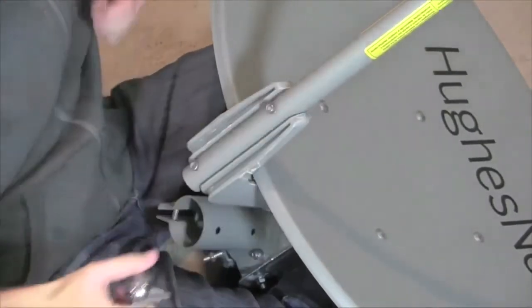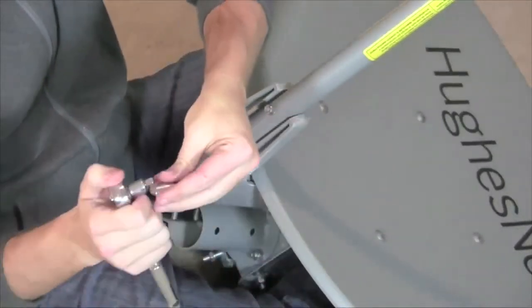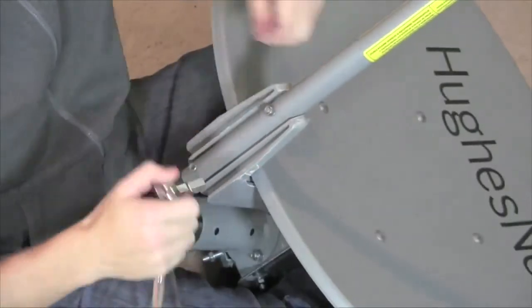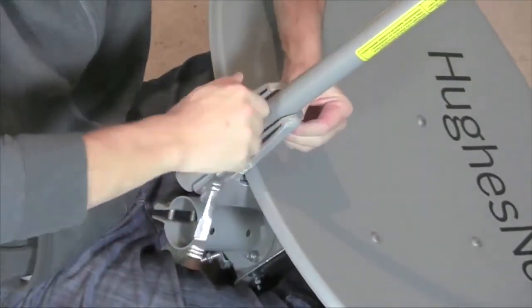Use a 7/16 inch wrench to tighten the bolts, securing the feed arm to the reflector bracket. This video uses a socket wrench with a 7/16 inch socket.